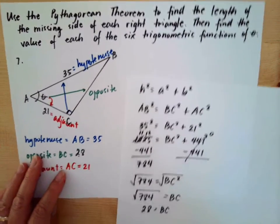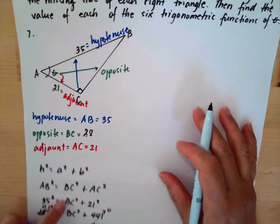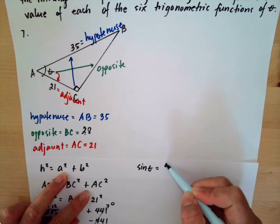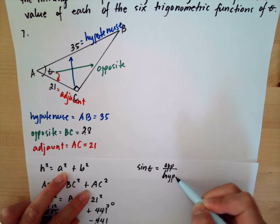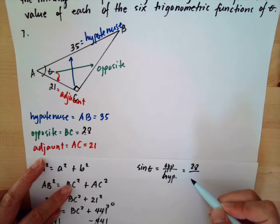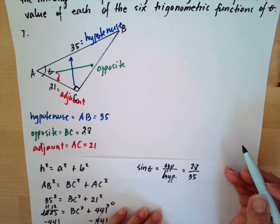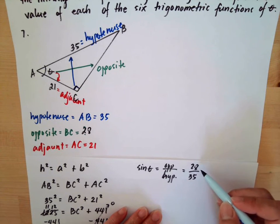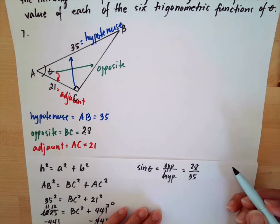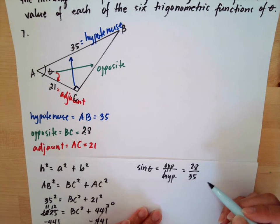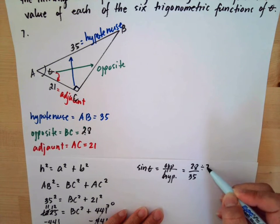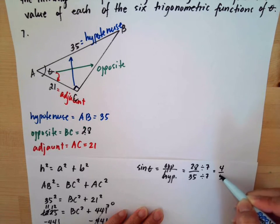Now we can solve the six trigonometric functions. Sine theta equals opposite over hypotenuse, so that is 28 over 35. Checking for common factors: 28 equals 7 times 4, and 35 equals 7 times 5, so dividing both by 7 gives us 4 over 5. Sine theta equals 4/5.